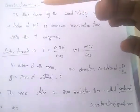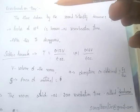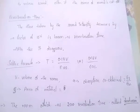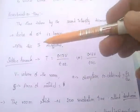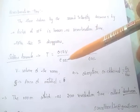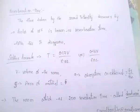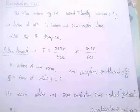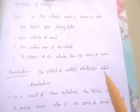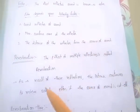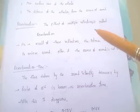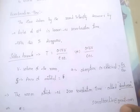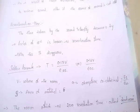To recap: reverberation time is the time for sound intensity to decrease by a factor of 10^-6, and Sabine's formula is T = 0.17V / ΣAs. A room which has zero reverberation time is called a dead room.